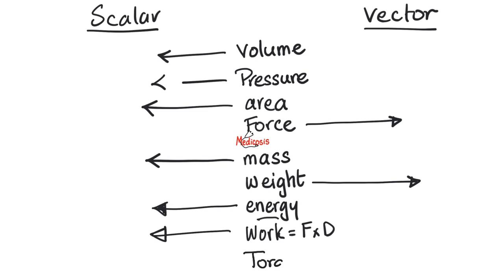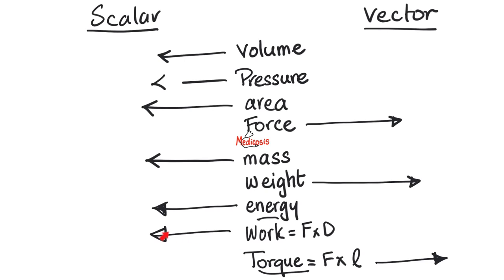But how about torque? Torque is also the result of multiplying two vectors together — force and lever arm. But you have to be very careful: just because it's the multiplication of two vectors doesn't necessarily make it scalar. In fact, torque is a vector because torque has a direction. You really have to think about it — you cannot rely on shorthands. Work is scalar; torque is vector.